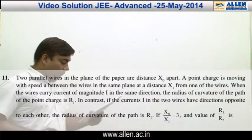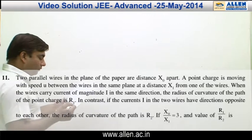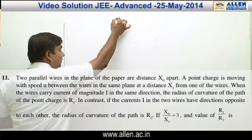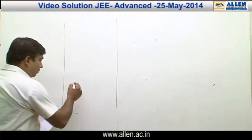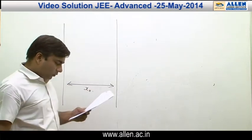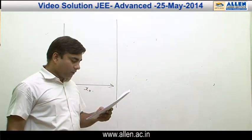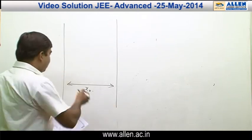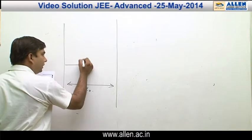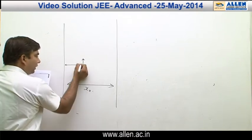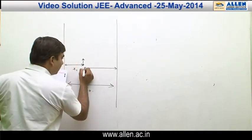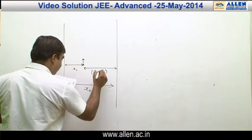Now let us look at question number 11. The question says there are two parallel wires in the plane of the paper at a distance of x naught from each other. A point charge is moving at speed u between the wires in the same plane, at a distance x1 from one of the wires. From the left wire the gap is x1 and the gap from the second wire becomes x naught minus x1.